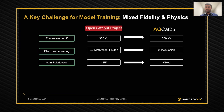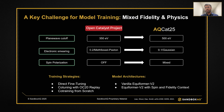When training a model with data containing mixed fidelity and mixed physics — different plane wave cutoffs and the inclusion of spin polarization — there are a number of challenges in model training that we had to address. We looked at a number of training strategies and model architectures: direct fine-tuning of OC20 models with AQCAT25, co-tuning pre-trained OC20 models with a replay of OC20 data, and co-training models from scratch using both AQCAT25 and OC20. In terms of model architectures, we focused on the vanilla Equiformer V2 and also modified Equiformer V2 with spin and fidelity context given the mixed fidelity and mixed physics data.